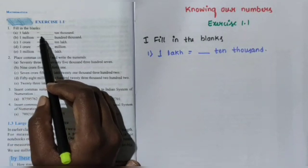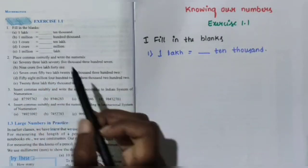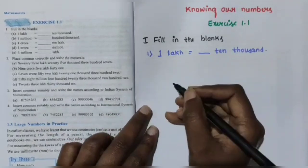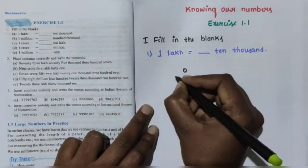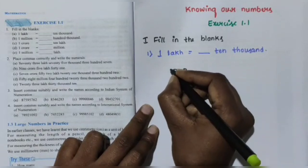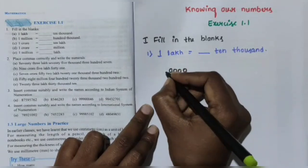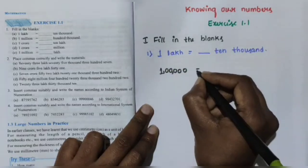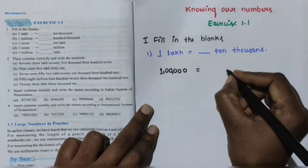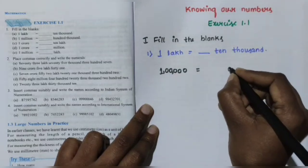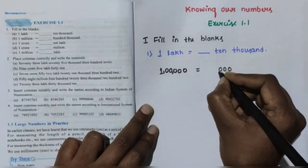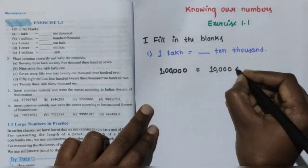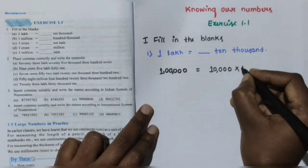Question number 1: 1 lakh is equal to dash 10,000. First you write 1 lakh — in the Indian system, 1 lakh is 1,00,000. We need to find how many times 10,000 goes into 1 lakh, so we multiply 10,000 by 10.